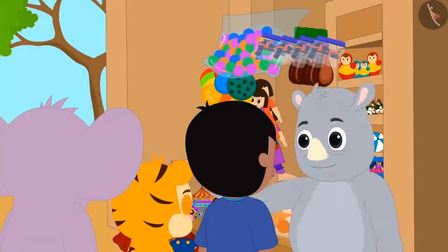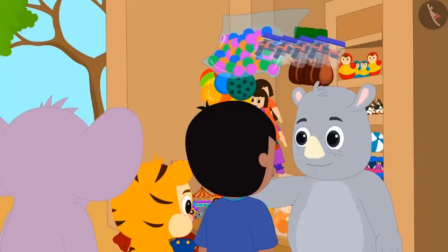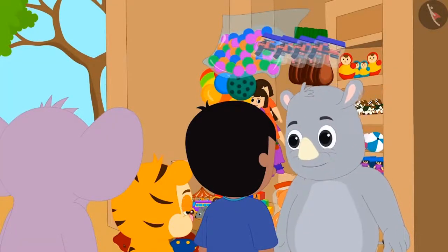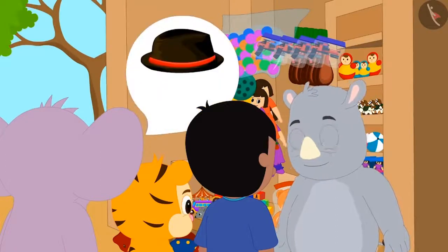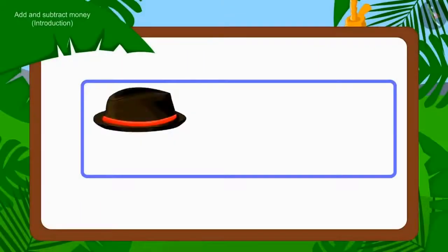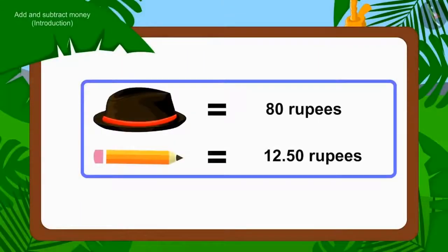All three friends have come to Gaggoo's toy store. They have to buy a hat and a pencil. The cap is Rs. 80 and the pencil is Rs. 12.50.